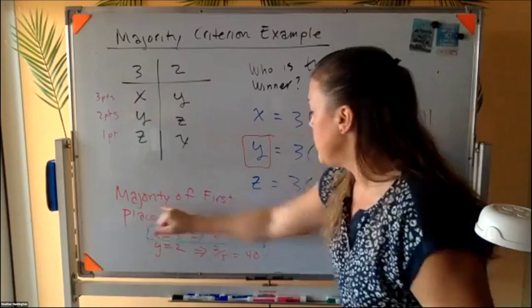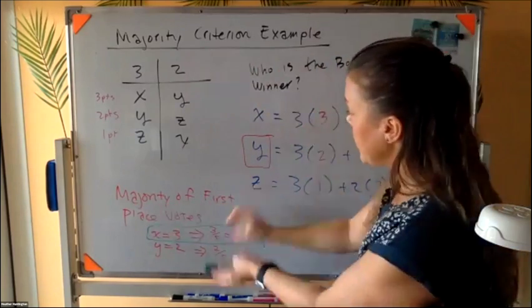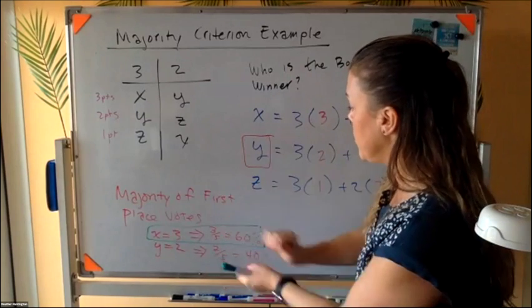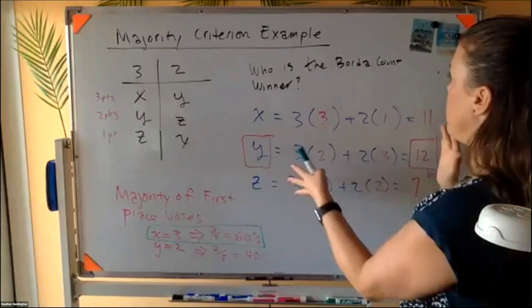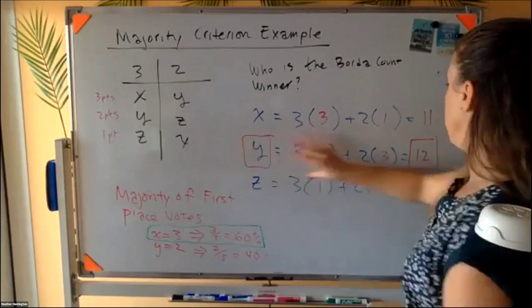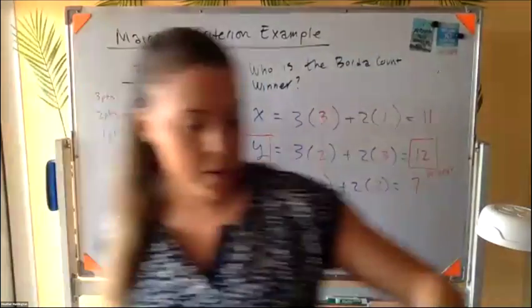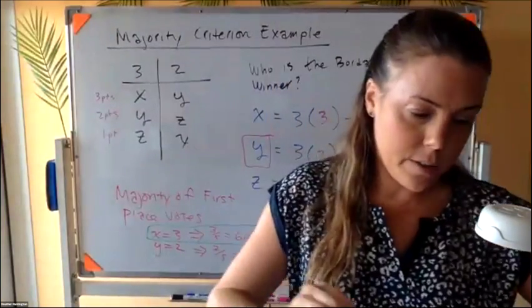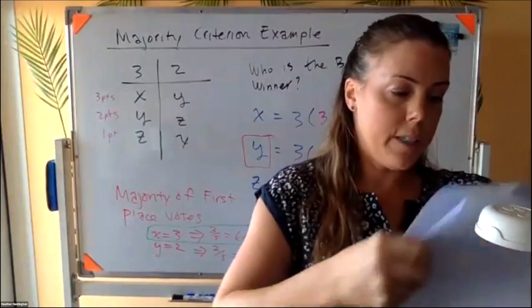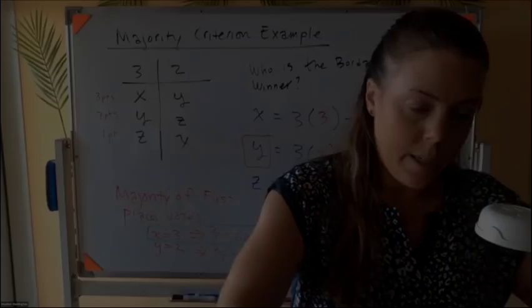So here, this is just demonstrating where one of the criteria is a fail. It fails, right? So it's the majority criteria. So X feels like he should win or she should win. Meanwhile, with Borda count, Y ends up winning. Okay. So that one's important to recognize how a criteria fails.